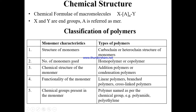Based on the number of monomers used, polymers are classified as homopolymers or copolymers. If a polymer consists of a single type of monomer, it is called a homopolymer. If two different monomers are used to form a polymer, it is called a copolymer. Polymers can also be classified based on the chemical structure of the monomers as addition polymers or condensation polymers.